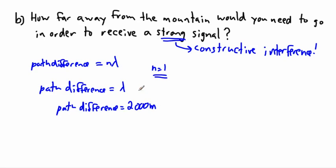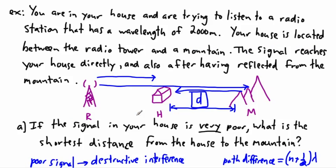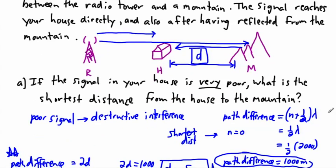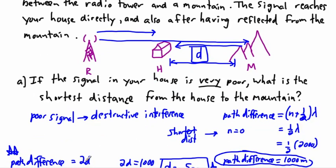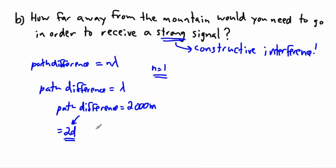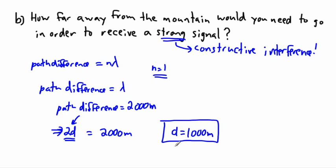Just like before, the path difference also equals 2D — two times the distance to the mountain. So 2D equals 2,000 meters, and therefore D equals 1,000 meters. That is where you should go to pick up the next strong signal.